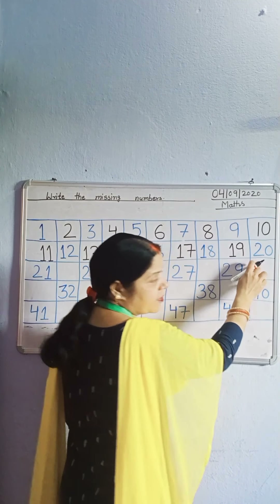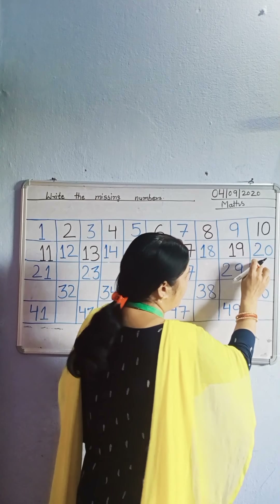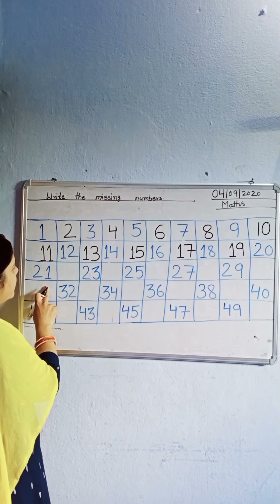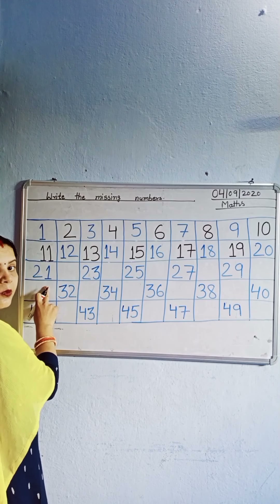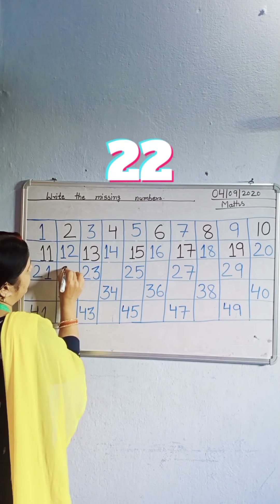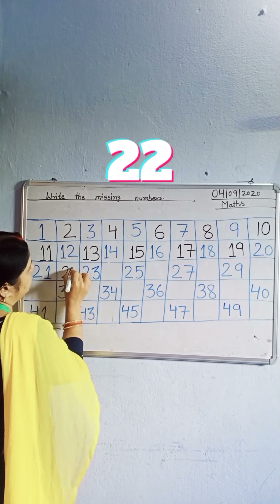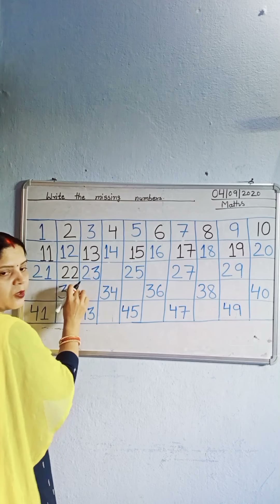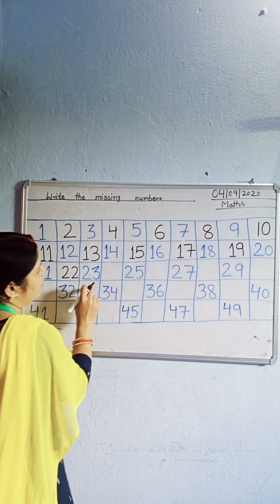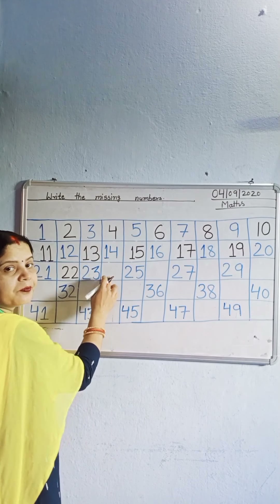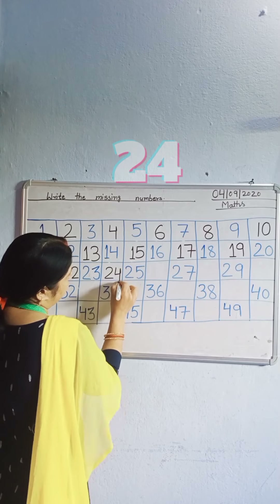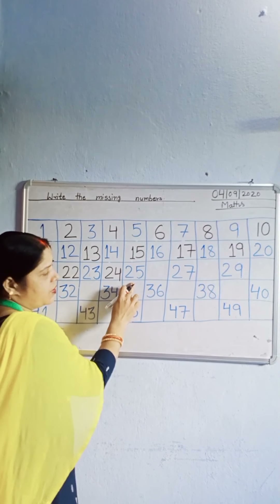Next, which number? 20. Next, which number? 21. Which number is missing? 22. Write down 22. Which number? 23. Which number is missing?